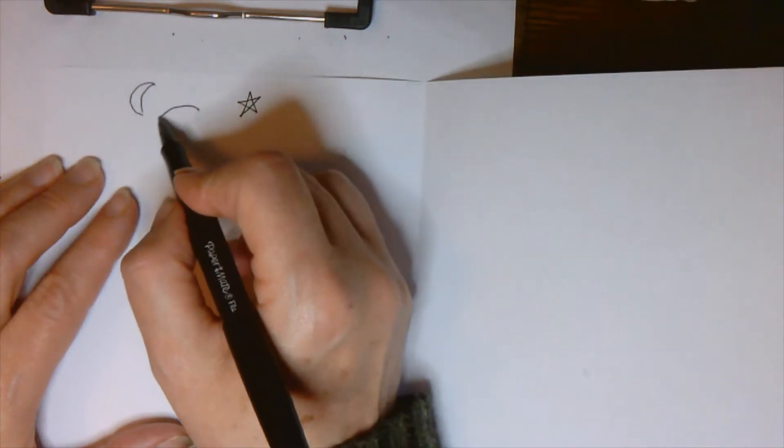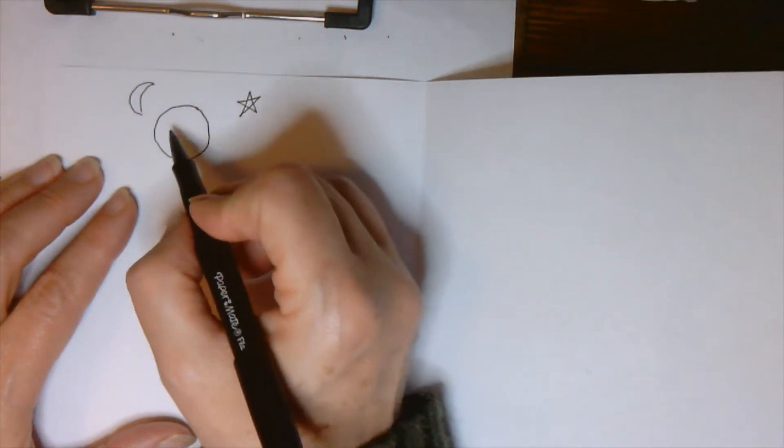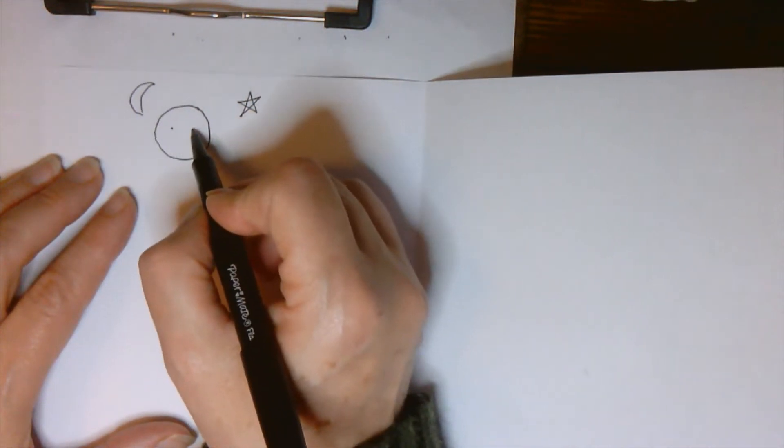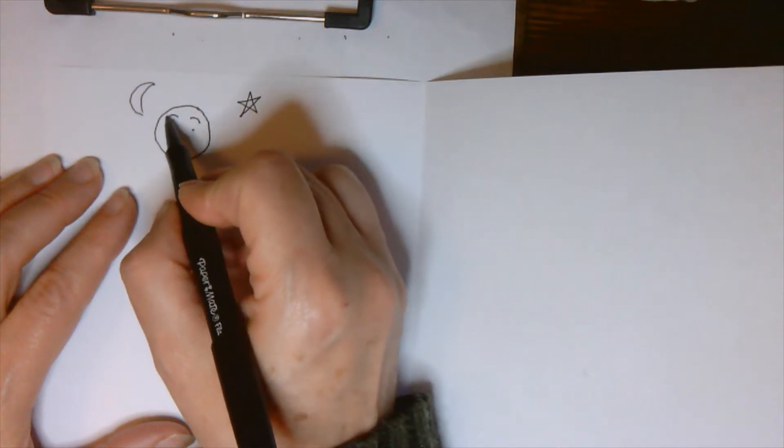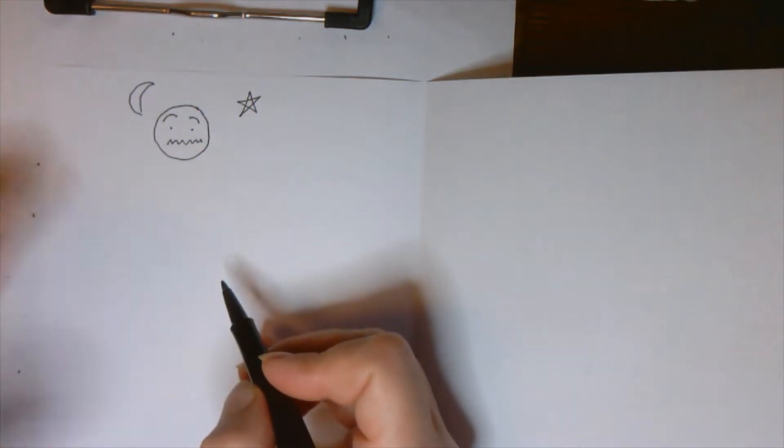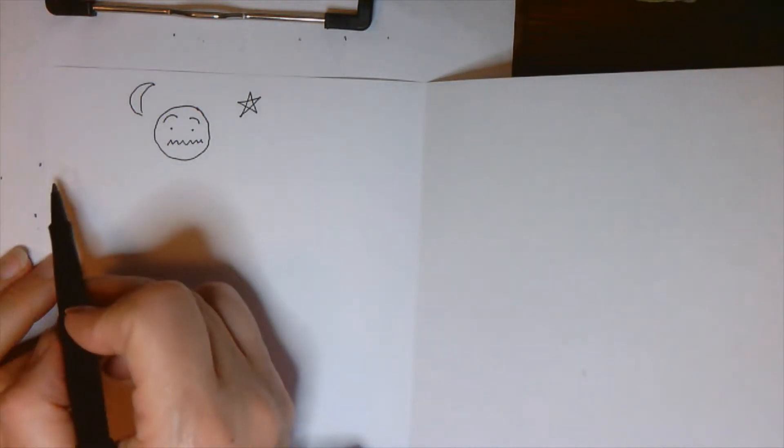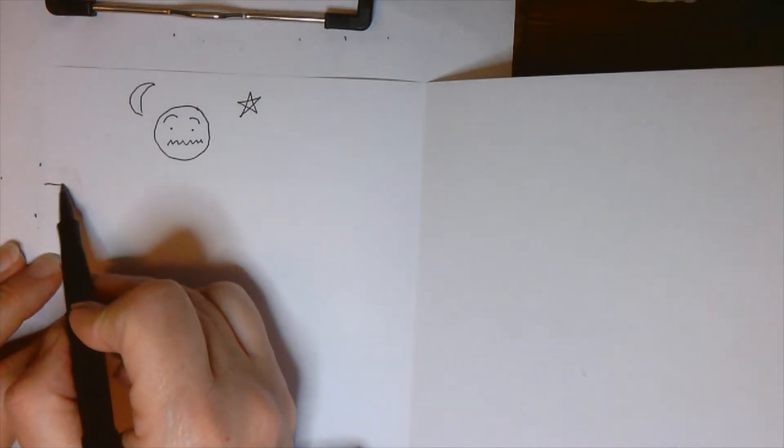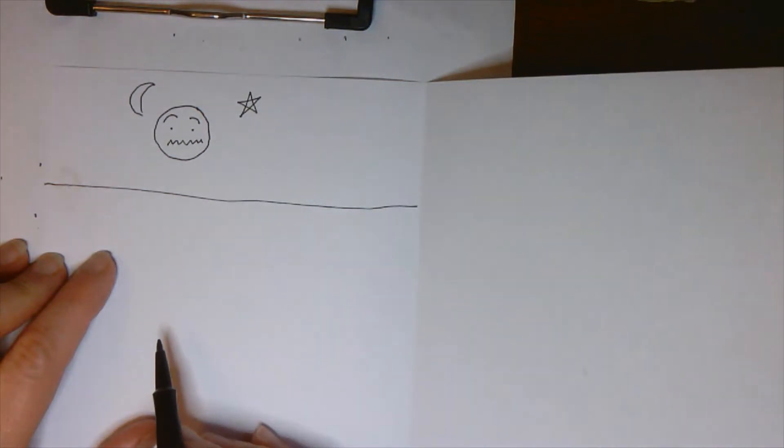And so we're going to put up here a little moon and a star to show that it was nighttime, and then we're going to draw kind of a sad or confused face because this time in the garden was not a great time. Jesus was really sad, and then his disciples were scared when he was arrested and taken away. So that's what we're putting there for the time in the garden, and then we're going to put a line to show that underneath here now is going to be the next part of the story.